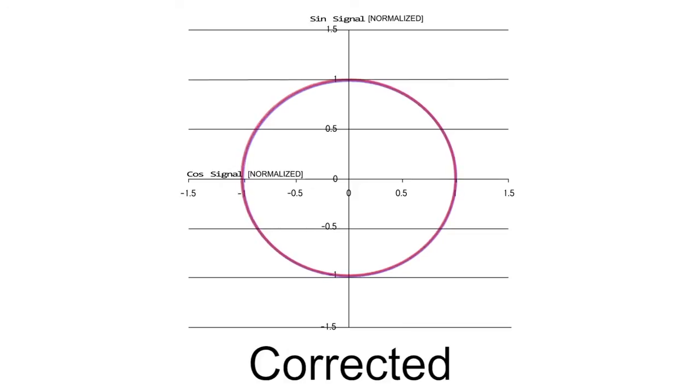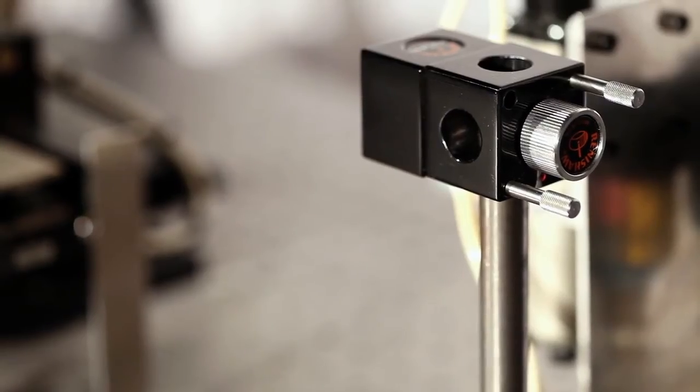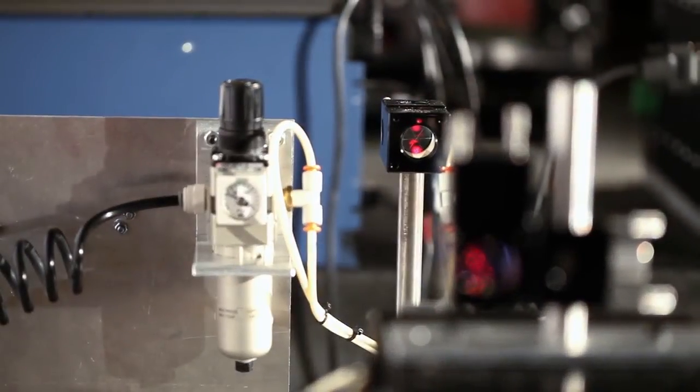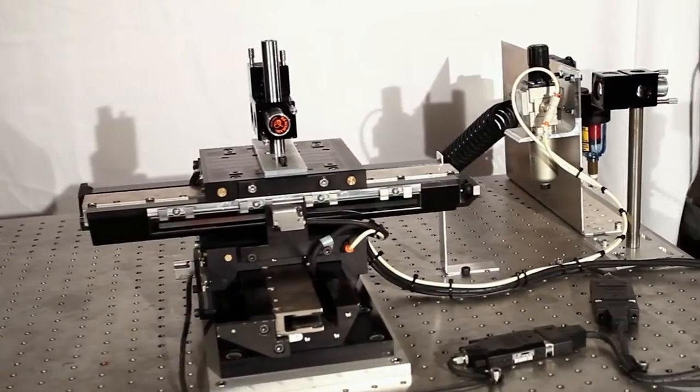If the offsets are not compensated, the position calculation error will be much higher than the 1% range defined in the specification of the encoder.